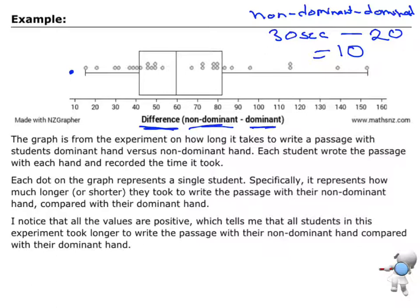And then each dot on here, so each of these dots represents the difference. How much longer they take to write with their non-dominant hand compared to their dominant. So that's our first step, is to know that each dot represents a single student and how much longer or shorter they take to write that passage.